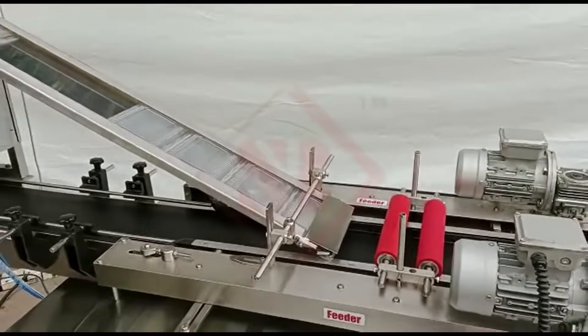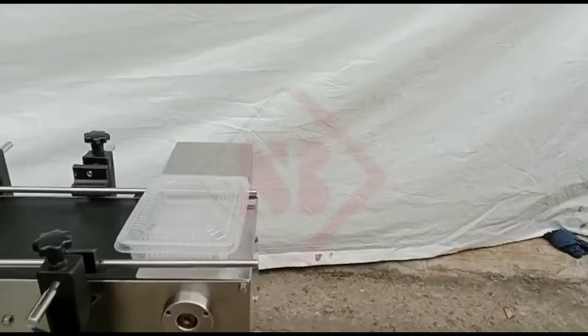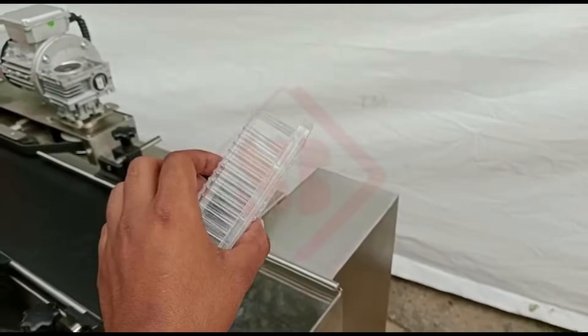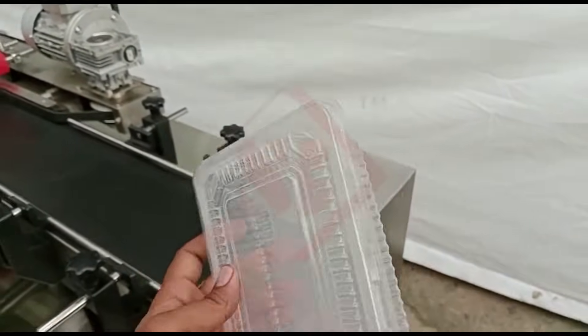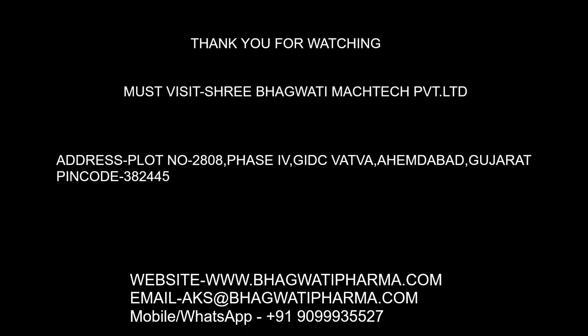In summary, the Automatic Lid Pick and Place Pressing Machine is a sophisticated industrial automation solution that revolutionizes lid placement and pressing processes. Its precise mechanisms, advanced control system, and comprehensive process make it ideal. Thanks for watching. For inquiry contact below mobile number or email ID.